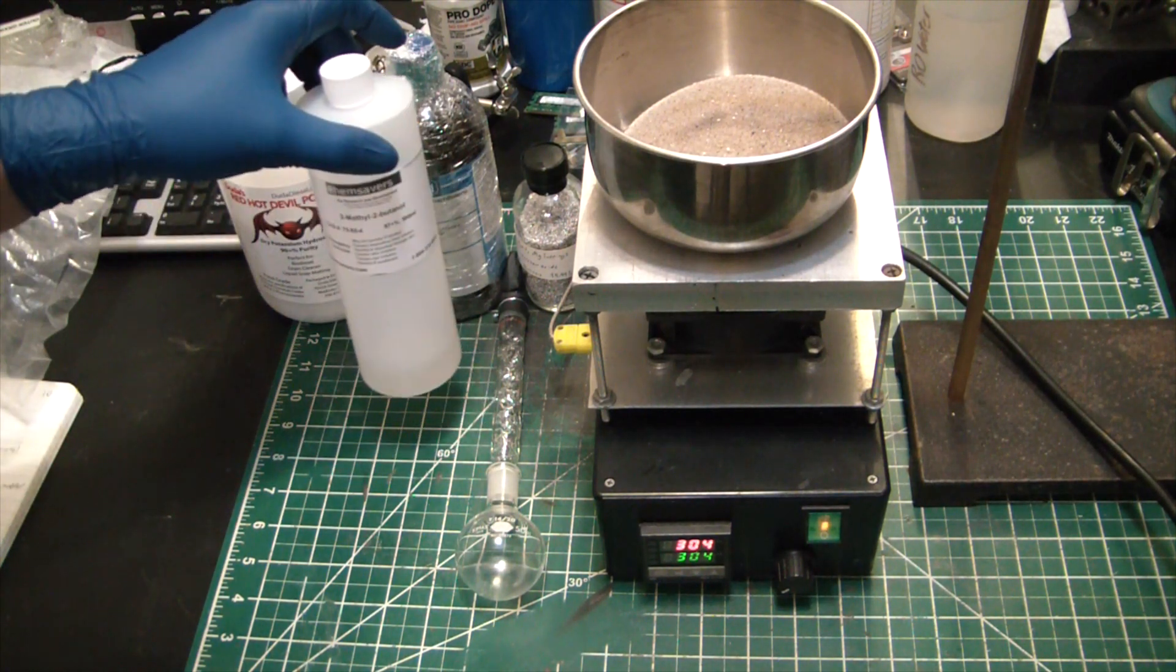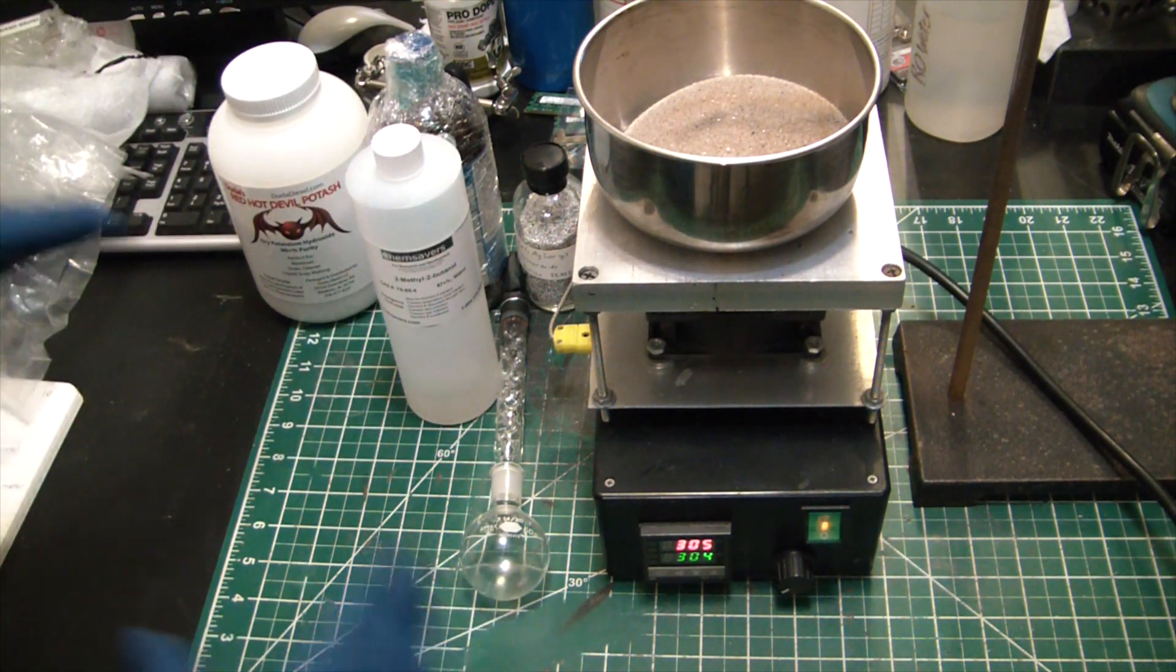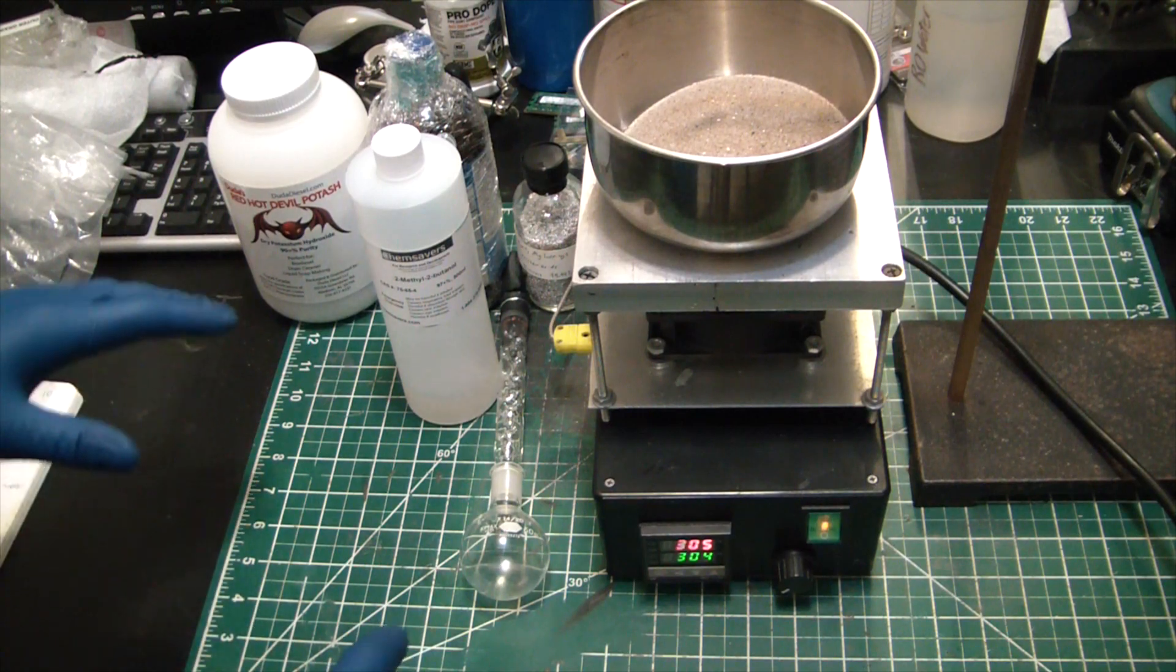2-methyl-2-butanol also called t-amyl alcohol. And we're just going to use 0.8 milliliters of the stuff, so you don't need much. And I'm also doing a very very small reaction compared to what NerdRage does.